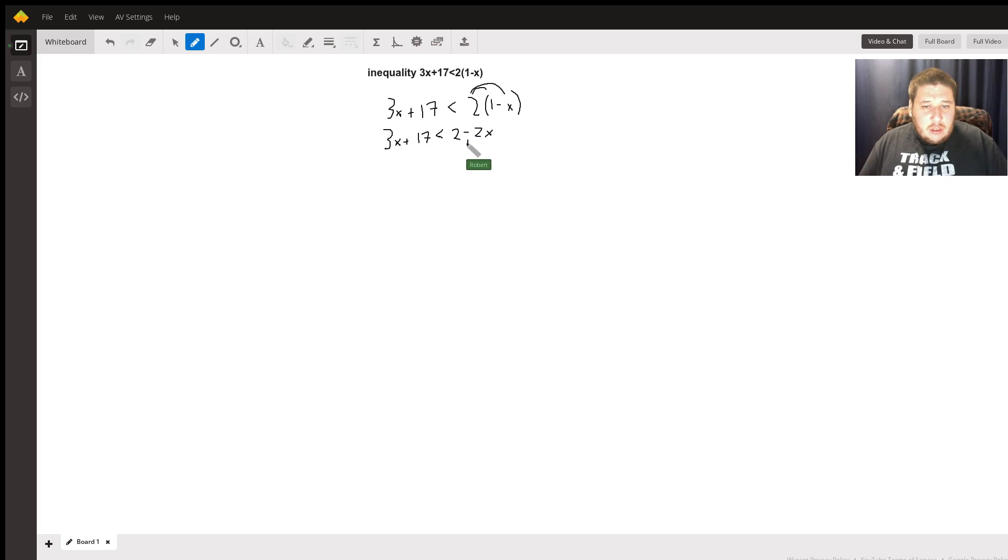I'm going to add 2x here, and what I do to one side, I have to do to the other side. 3x plus 2x is going to be 5x, and that plus 17 comes along for the ride. Negative 2x plus 2x is going to give me 0, so all I'm left with on that side is 2.